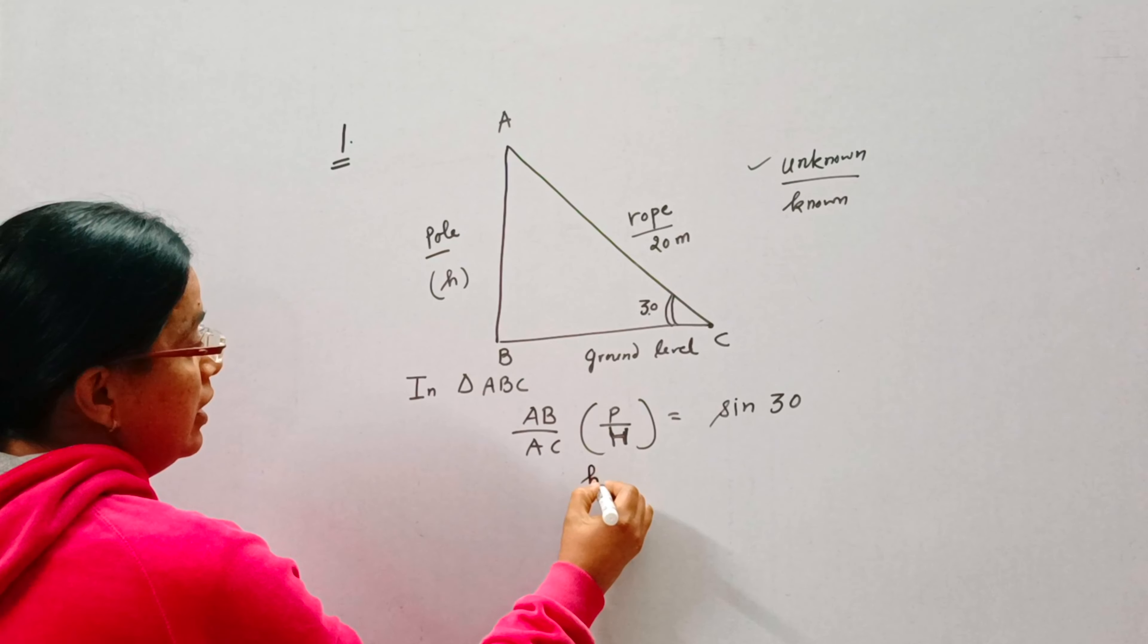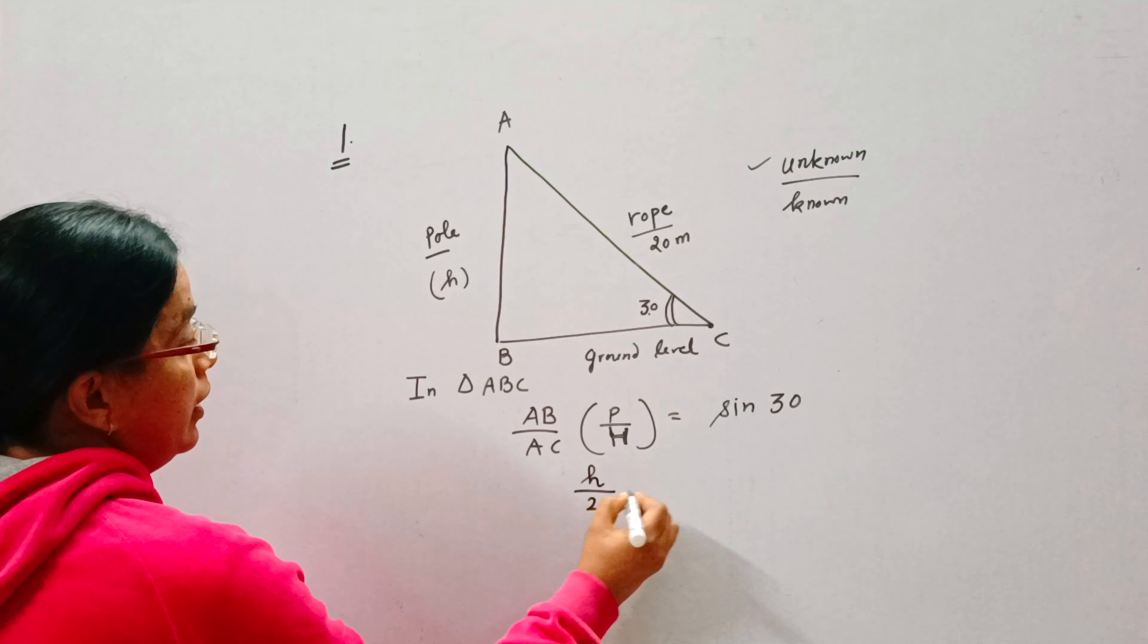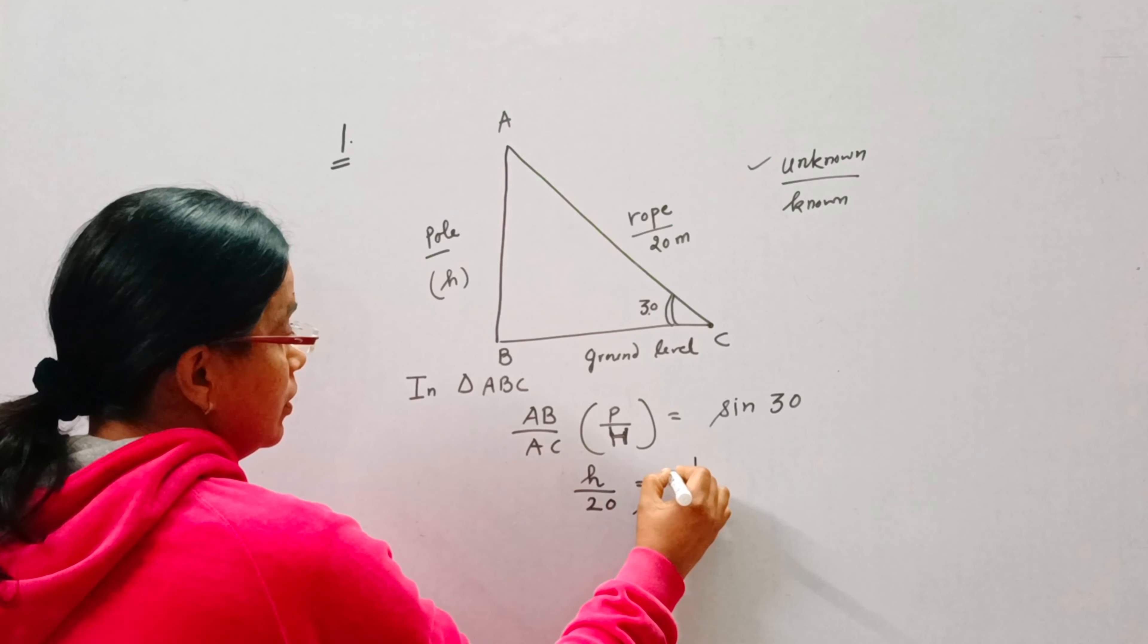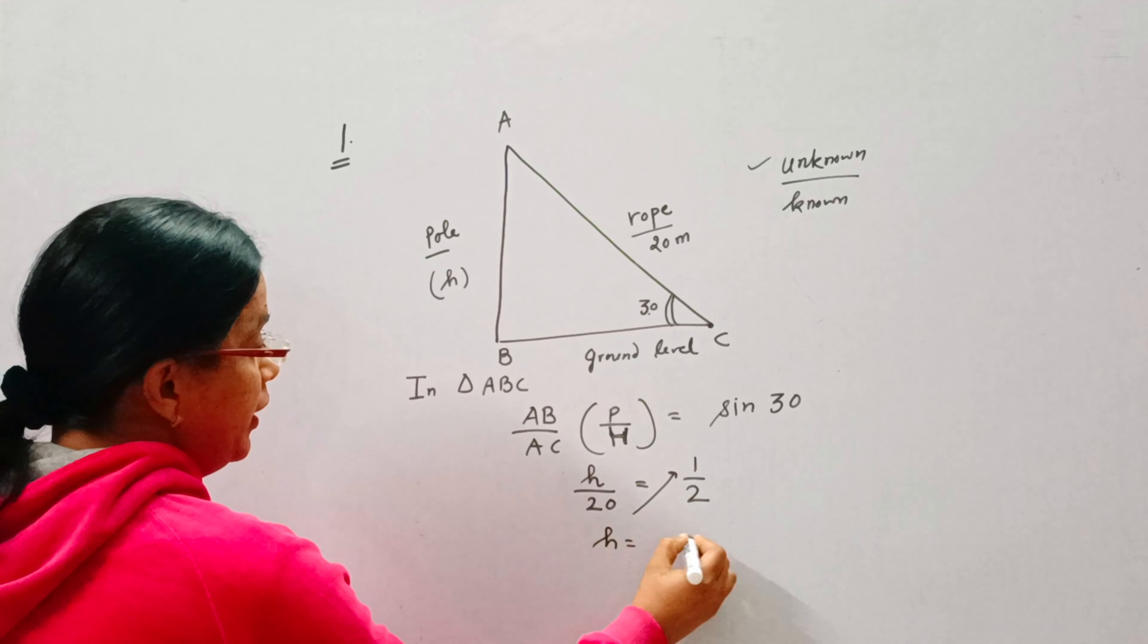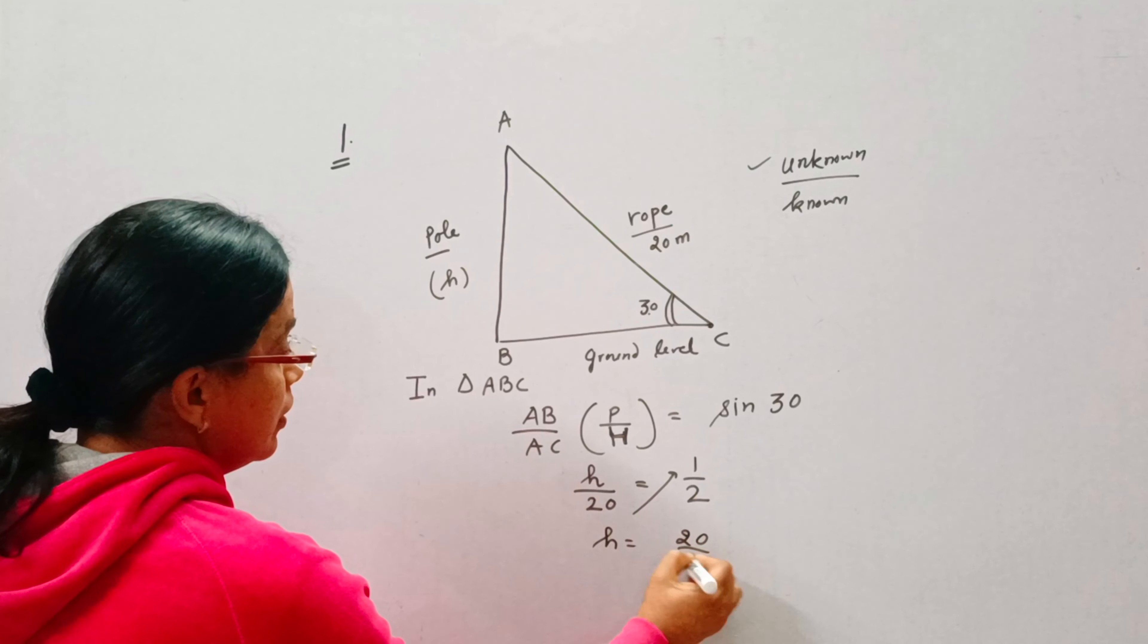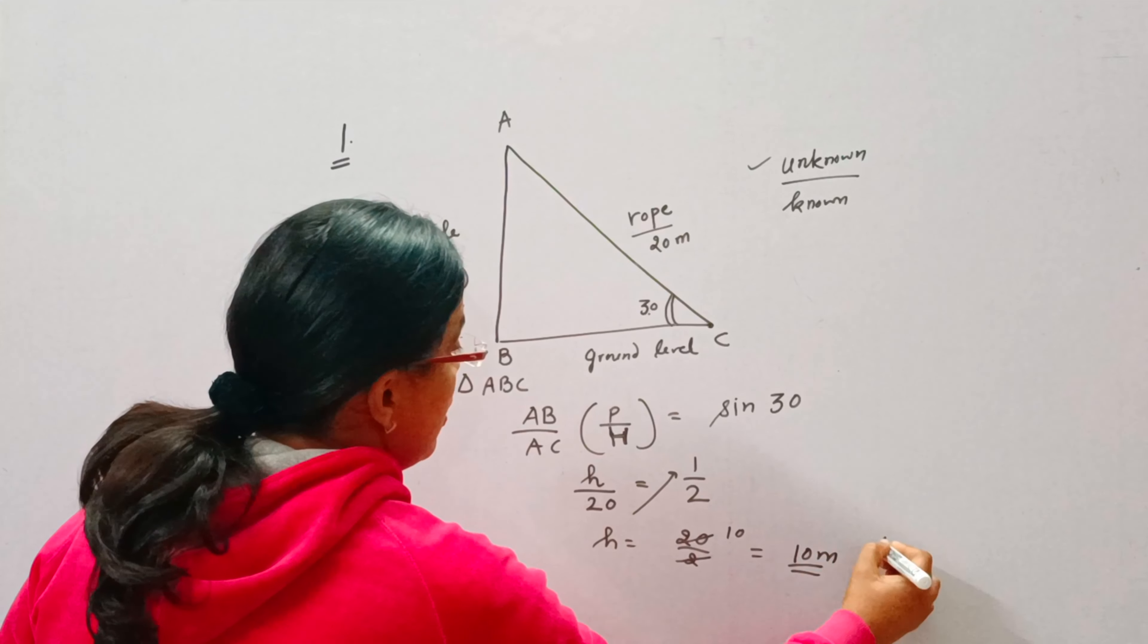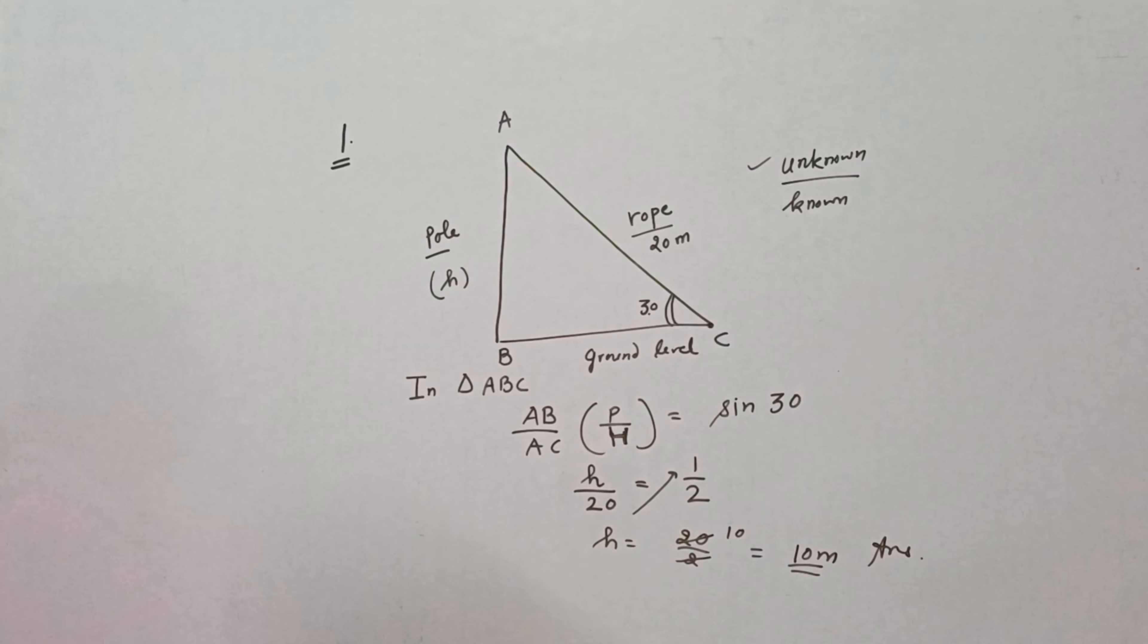Now, AB is H, AC is 20, and the value of sine 30 is 1 by 2. So H will be 20 by 2, that is 10 meters. And this is our answer. So what is the height of the pole? Height of the pole is 10 meters.